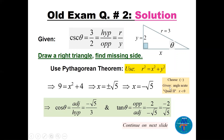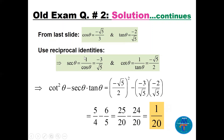So r squared equals 9, giving us 9 equals x squared plus 4, so x equals plus or minus square root of 5. We take the negative because the angle is in quadrant 2. Cosine theta is the adjacent over the hypotenuse, so there is a minus in cosine. Tan theta is opposite over adjacent: 2 over negative square root of 5, so minus 2 over square root of 5.